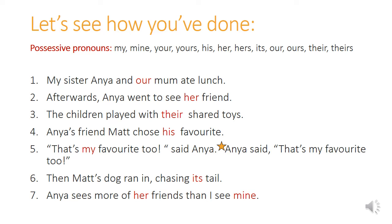Good work. Let's see how you've got on. We'll check each sentence — tick if you've got it correct and make sure you change it if you haven't quite managed it this time. So number one was done for you. In number two, you should have added the possessive pronoun her — it's replacing the noun Anya's: Anya's friend becomes her friend.